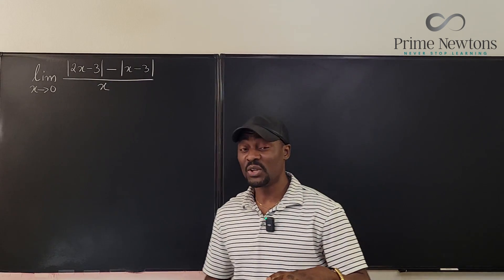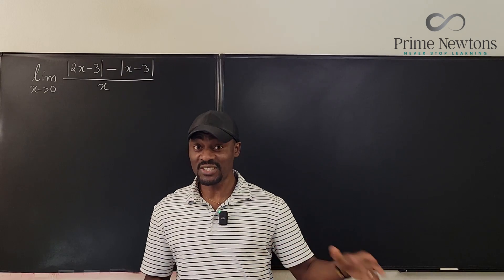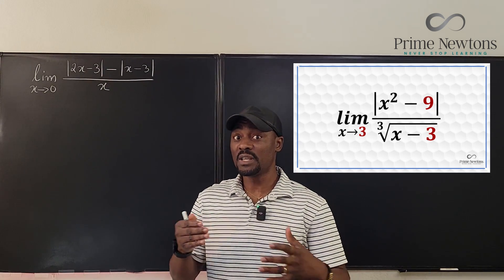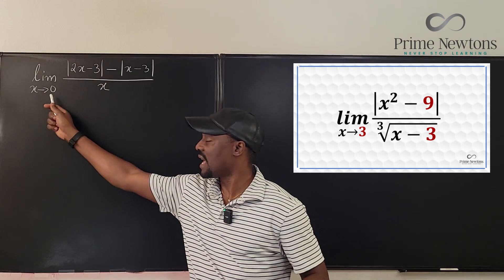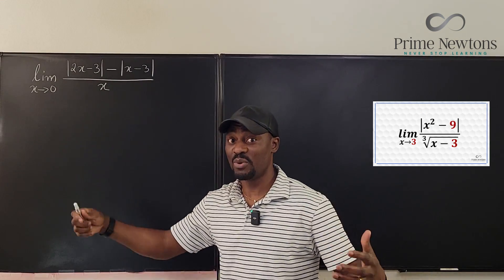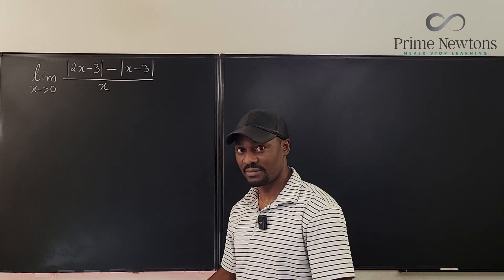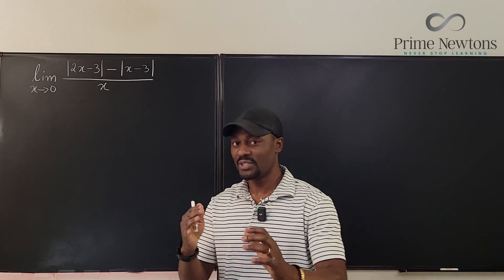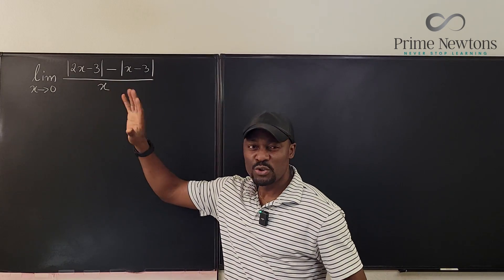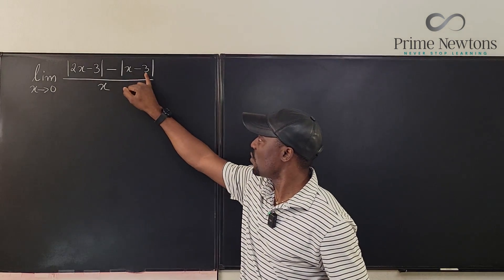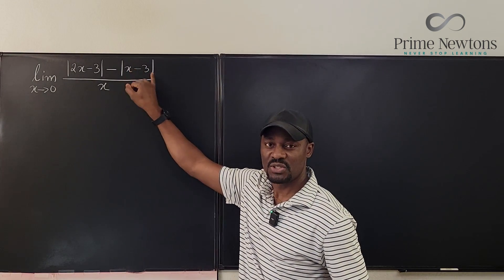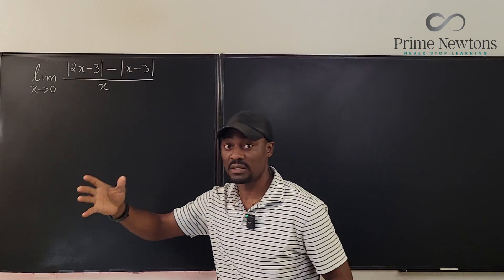But this problem is a lot easier than the one I did yesterday because the point at which we're looking for the limit, which is at zero, is not at the transition point of the function. Now this is what I mean. You see, the points you should be worried about is when x equals 3, because that's where this is likely to be zero and you talk about whether it's positive or negative.